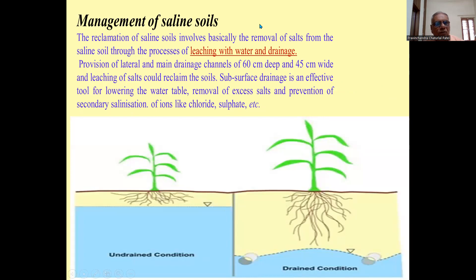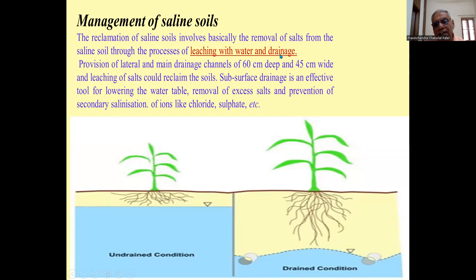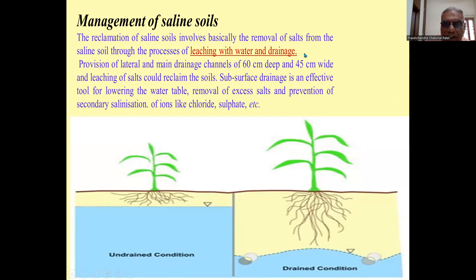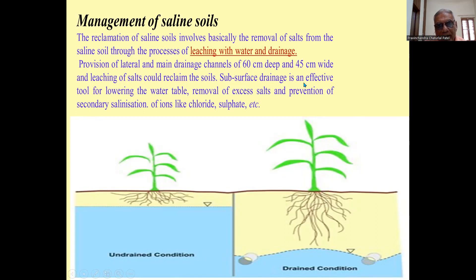Management of saline soil: the reclamation of saline soil involves basically the removal of salts through the process of leaching with water and drainage. For improvement and reclamation of the soil, provision of lateral and main drainage channels of 60 cm deep and 40 cm wide and leaching of salt could reclaim the soil. Sub-surface drainage is an effective tool for lowering the water table.